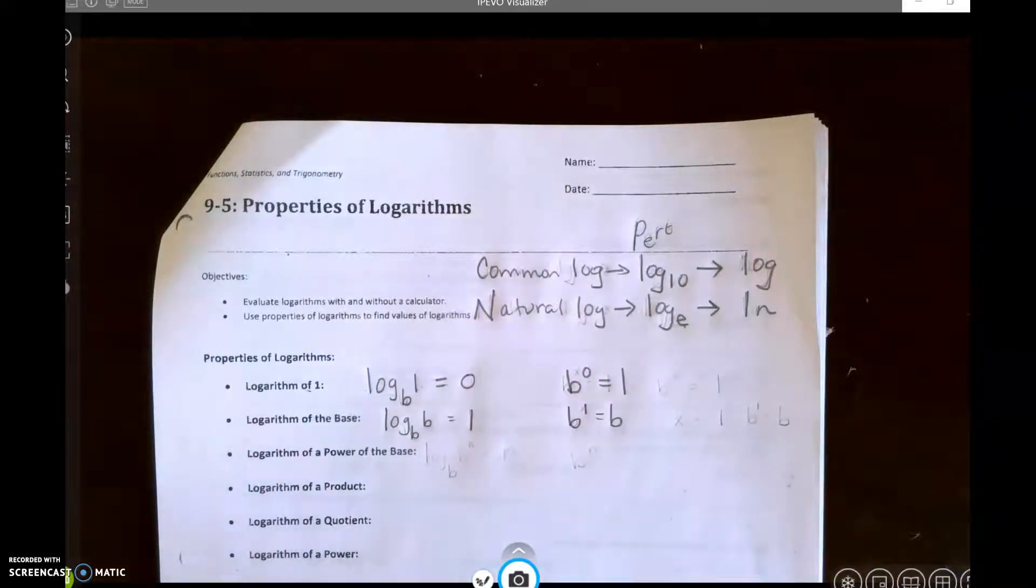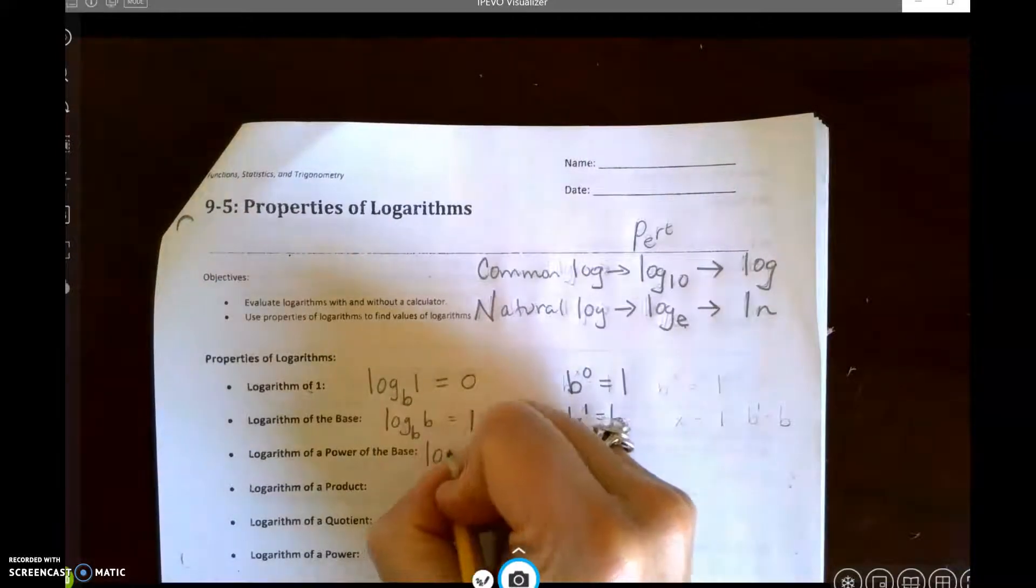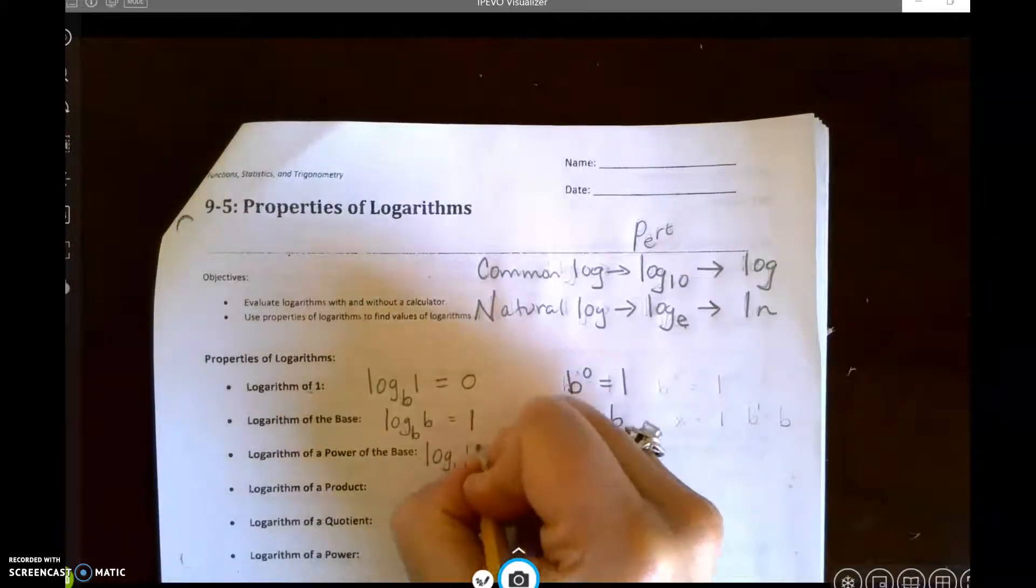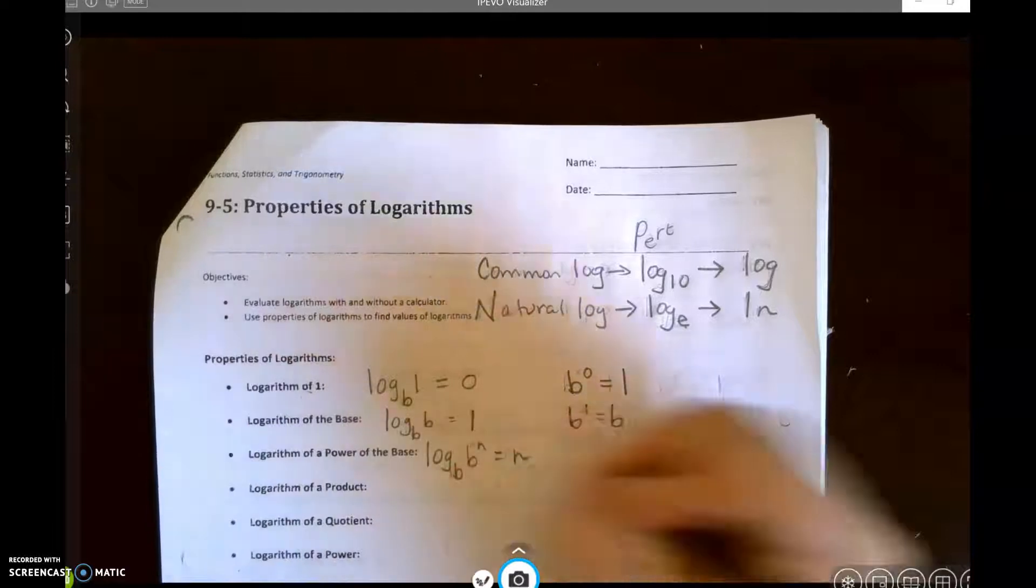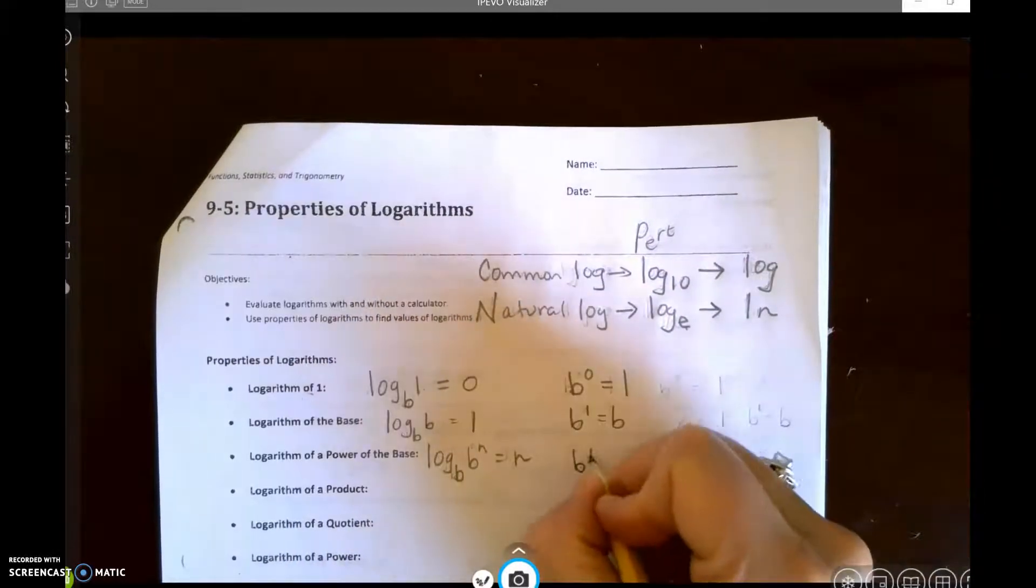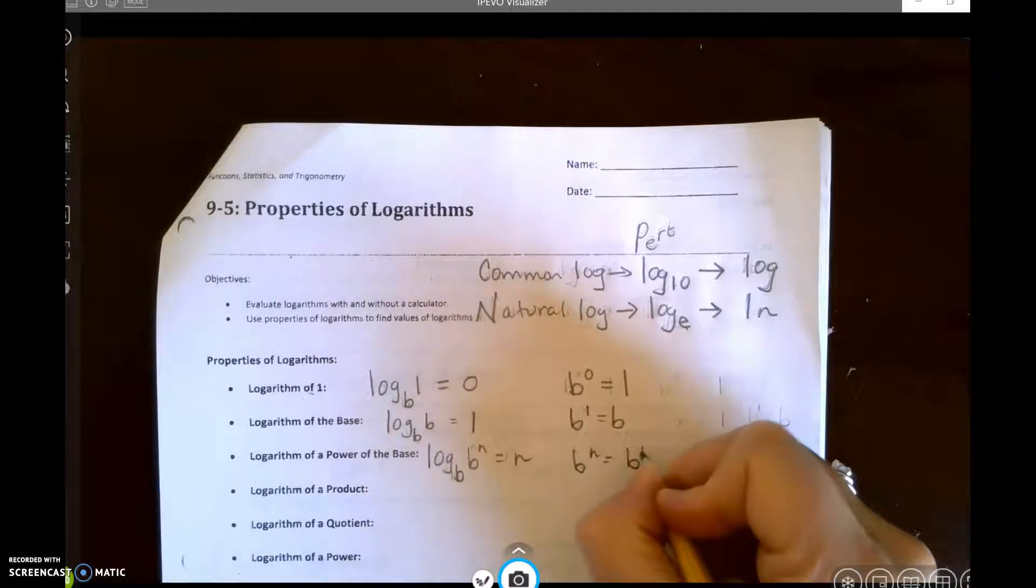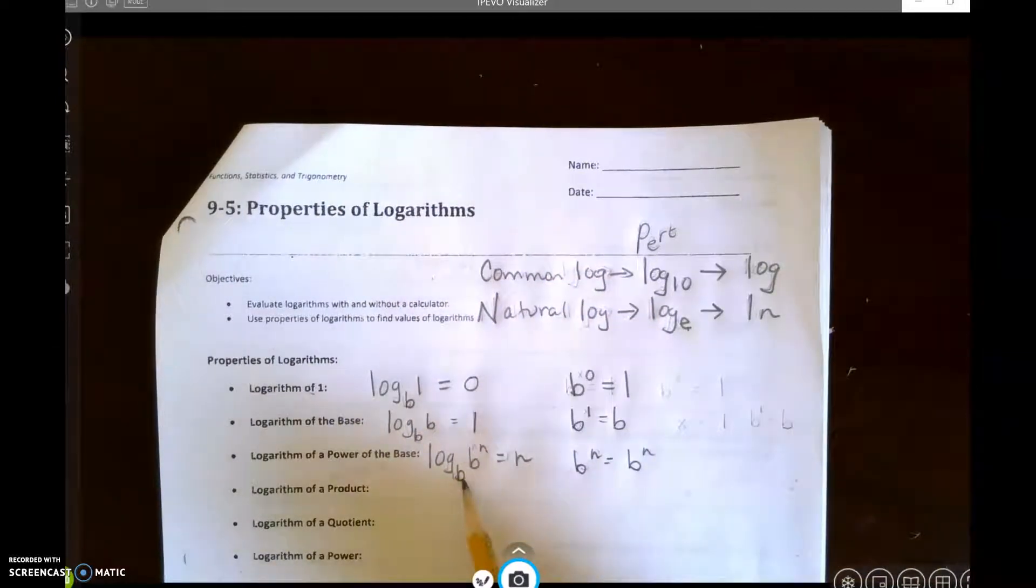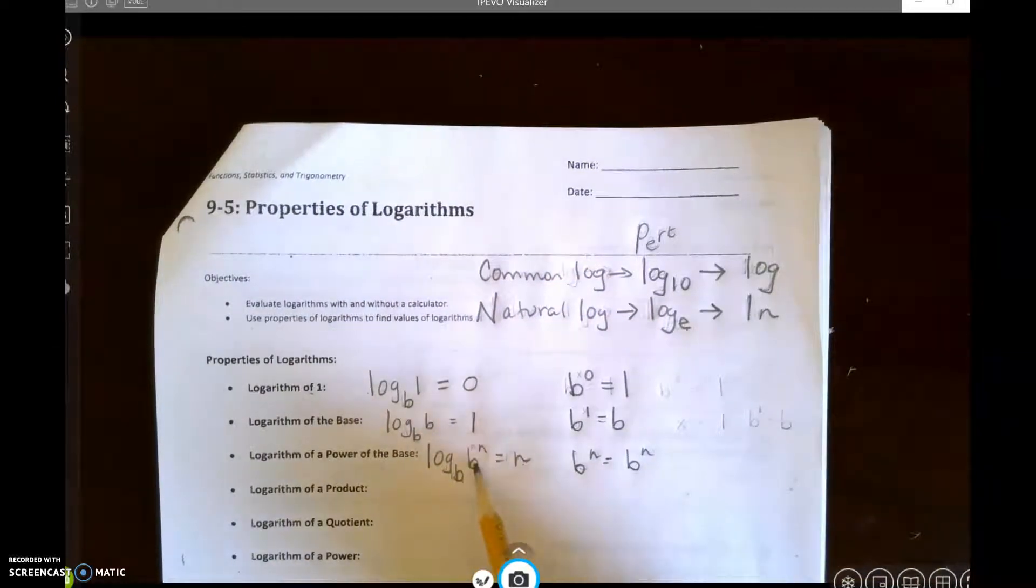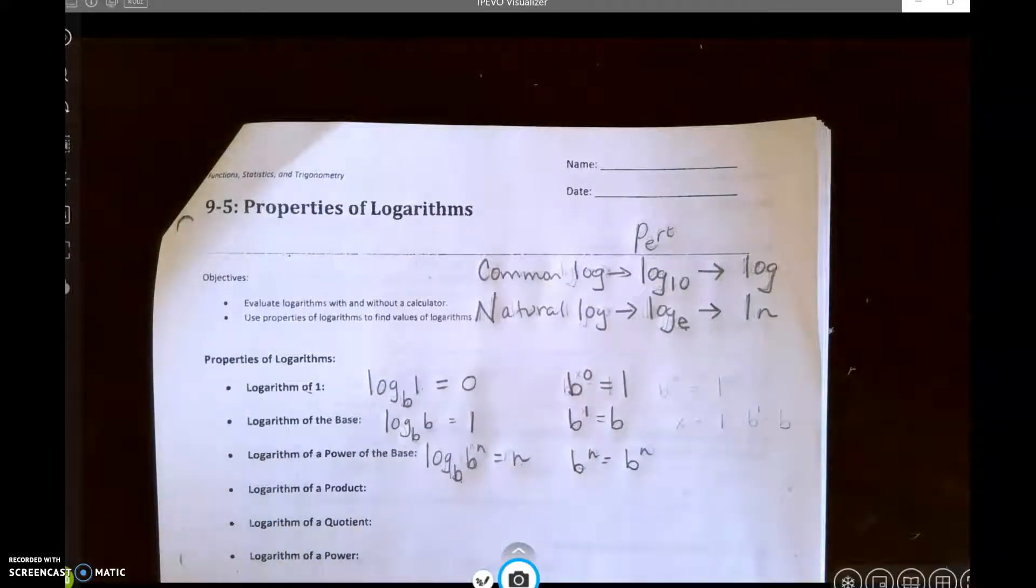Logarithm of the power of the base. So log base b of b to the n is going to be n, because b to the n equals b to the n. All right, let's go to logarithm of a product.